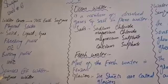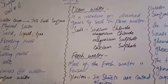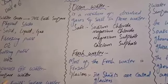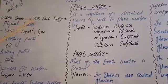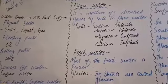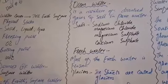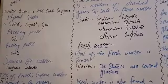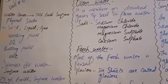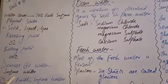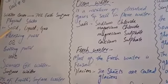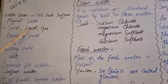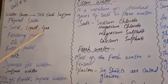First of all, water covers more than 70% of the surface of the earth. Now, you know that matter has three states: solid, liquid, and gas. Water also exists in these physical states — as solid (ice), liquid (water), and gaseous form such as vapor and steam.